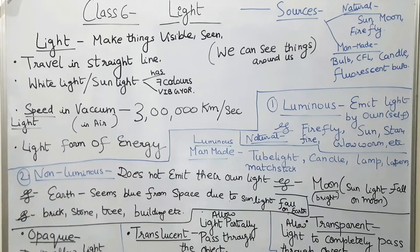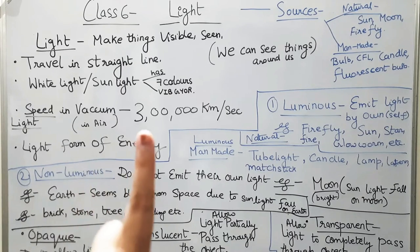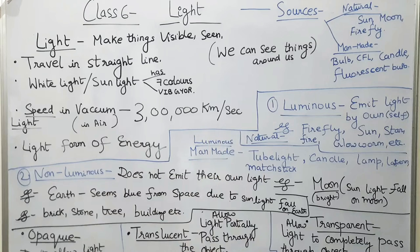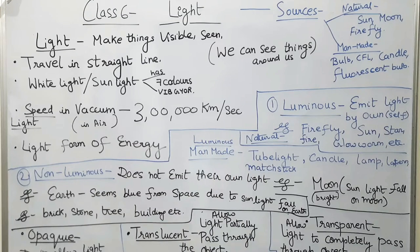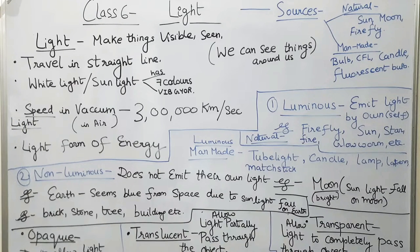The speed of light is very high — approximately 3 lakh kilometers per second in vacuum, as well as similarly in air. Light is a form of energy.